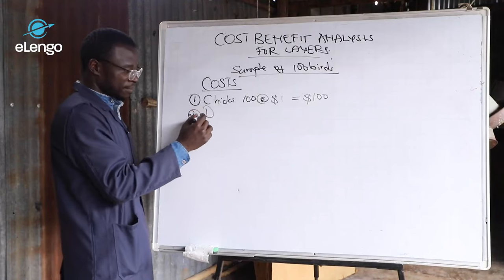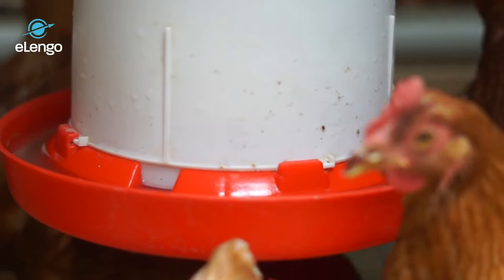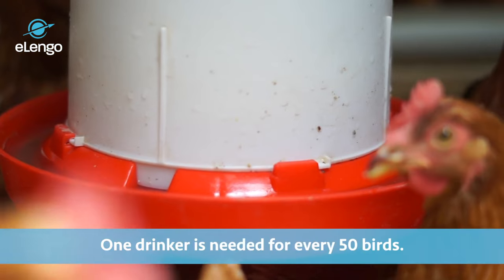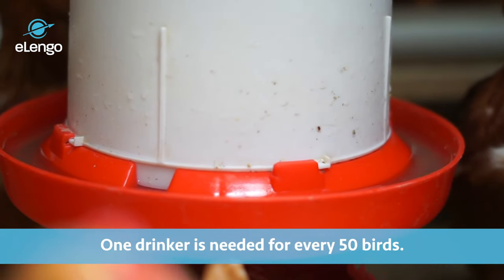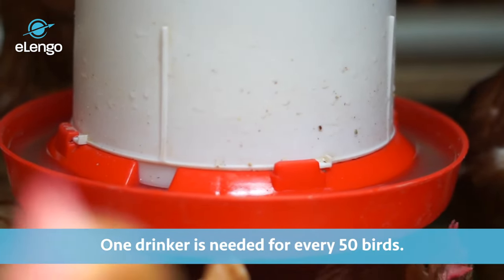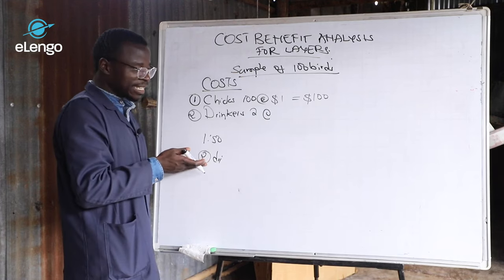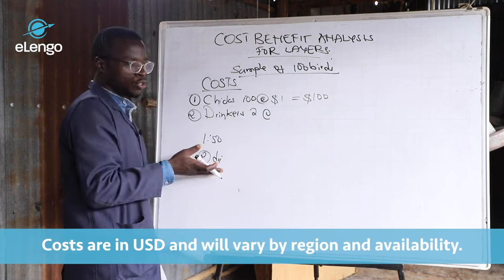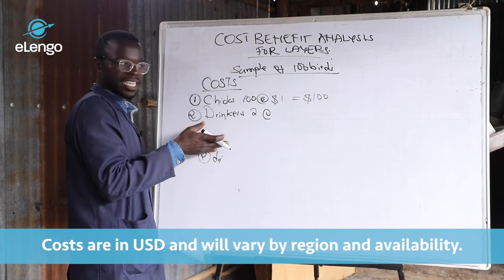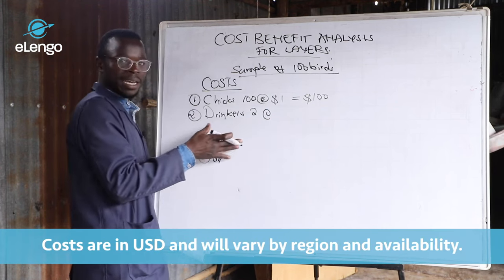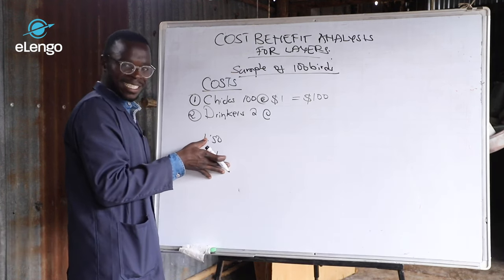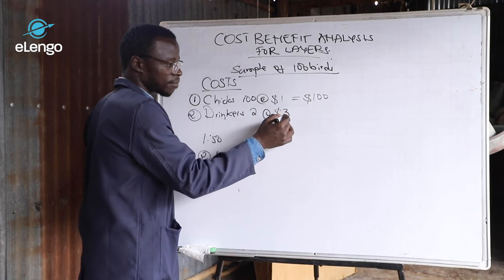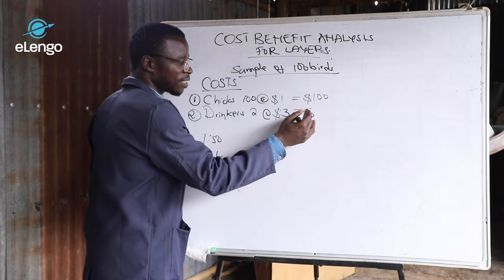You will need drinkers. On average, you will need one drinker to 50 birds. So, since there are 100, you will need two drinkers. On average, one drinker will be $2. But since you want to use this drinker both for the chicks and for the mature chicken, you need to buy a drinker that is at least 7 liters, which will go for $3. So, that will be $6.